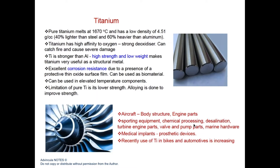Titanium is well known for lightweighting — lighter than steel, though heavier than aluminum. Its ultimate advantage is resistance against corrosion, and it is stronger than aluminum, providing a combination of high strength and low weight usable in elevated-temperature components. A limitation of pure titanium is lower strength compared to its alloyed form, which is why it must be alloyed. Titanium is increasingly used across industries beyond aircraft, including sports equipment and medical prosthesis devices.